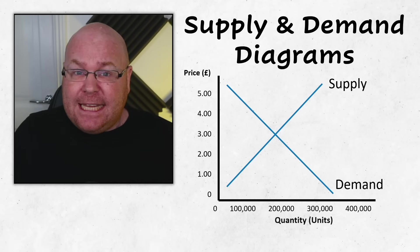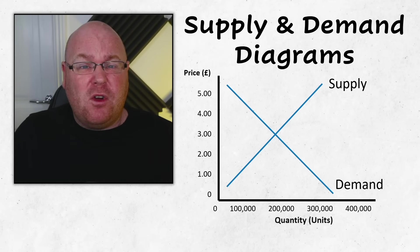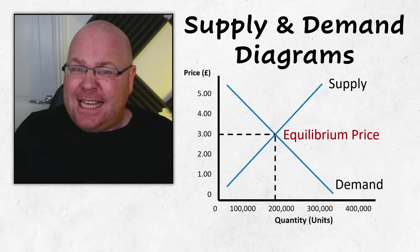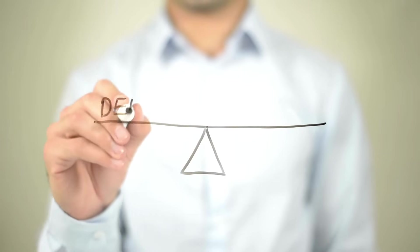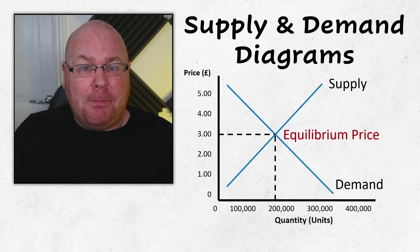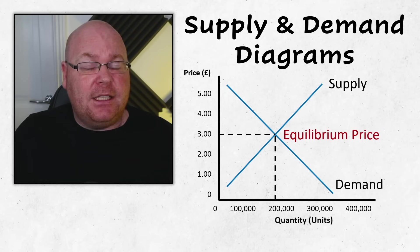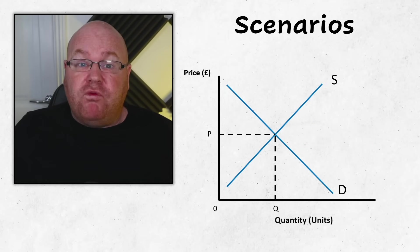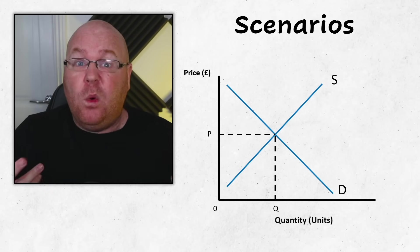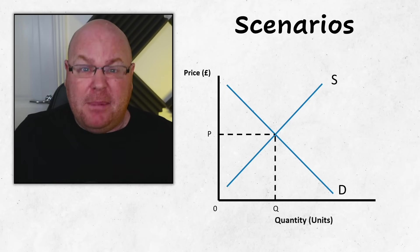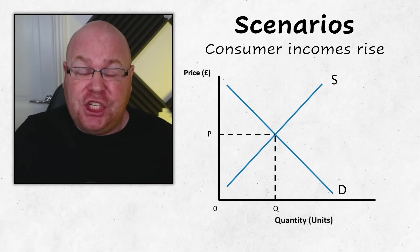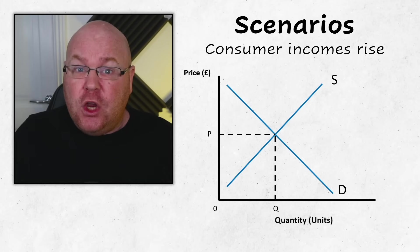It would be rare in an exam to draw a demand or supply curve in isolation — it's far more common to see them both on the same diagram, and you may be required to label the equilibrium price. That is essentially the point where the supply and demand curves intersect. In markets using the market mechanism, the price is determined by where the willingness to supply intersects with the willingness to purchase at a particular price. Replicating this basic structure with an equilibrium price labelled will score you marks, but to get full marks you may need to show a shift by adding a new line.